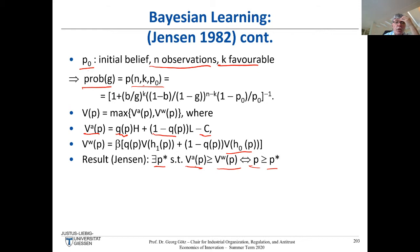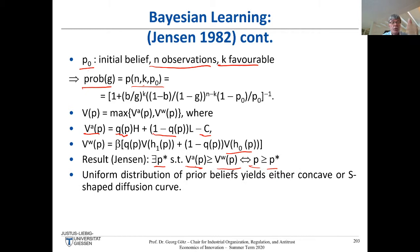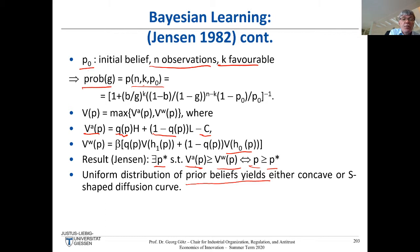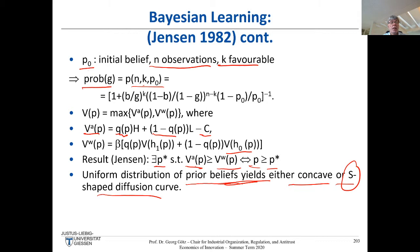Now we know there is this threshold. If you have a uniform distribution of prior beliefs — different Microsoft Windows users assigning different probabilities — you get either a concave or an S-shaped diffusion curve. With heterogeneity you get different adoption dates, and theoreticians are always happy when they can reproduce the S-shaped curve. A good innovation will eventually be adopted by the law of large numbers: even starting with prior belief zero, you'll eventually cross any threshold.